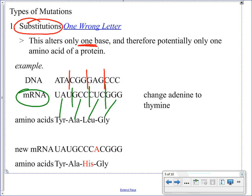If we change one single letter in the DNA — that is a substitution, substituting one letter for another. If we change an adenine to a thymine, that changes the corresponding base in the messenger RNA as well. We've only changed one letter out of twelve. Looking at the four codons, only one has changed, meaning only one amino acid has changed: the leucine is now changed to a histidine.